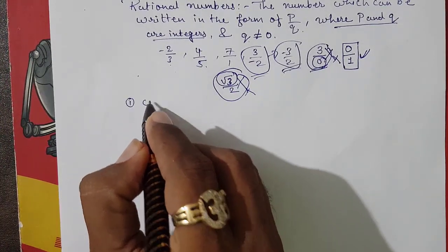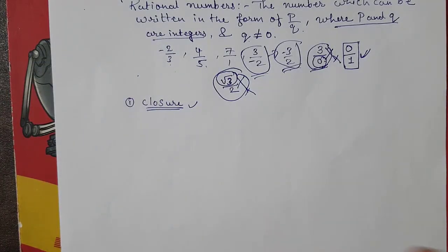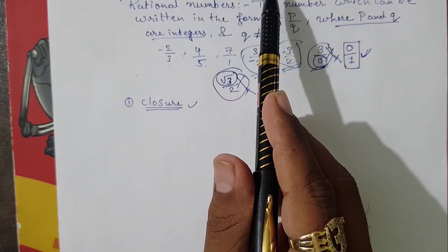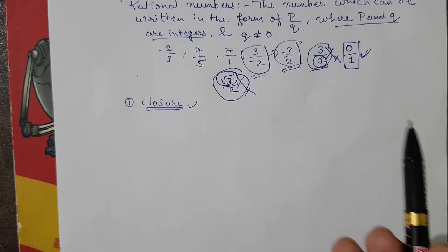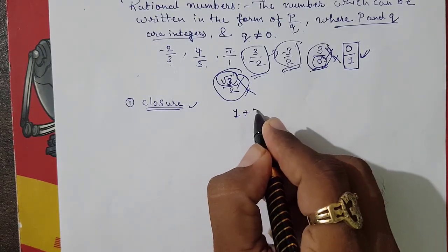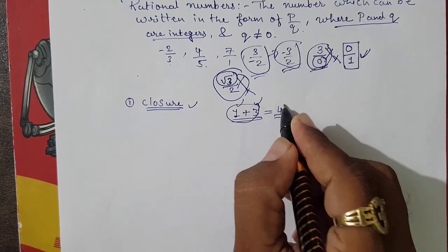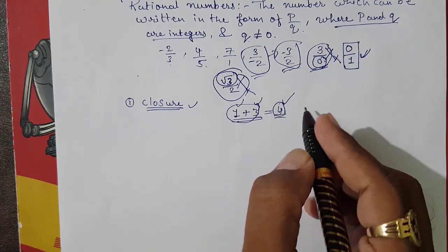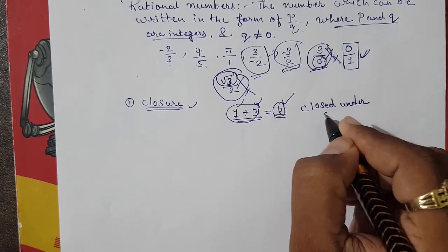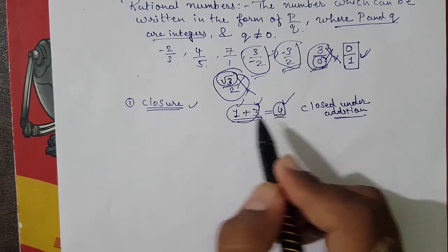In Class 8, we study different properties of rational numbers. The first is the closure property. Closure property means if you add, subtract, multiply, or divide any two numbers of a type, the answer should also be of the same type. For example, 1 plus 3 equals 4 — all are whole numbers, so whole numbers are closed under addition.